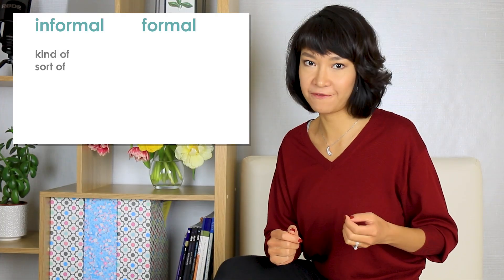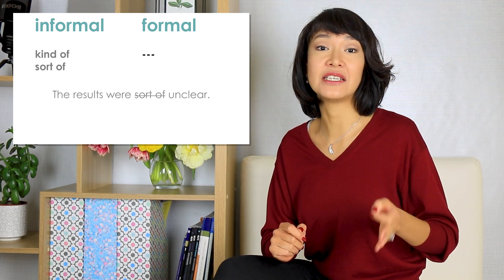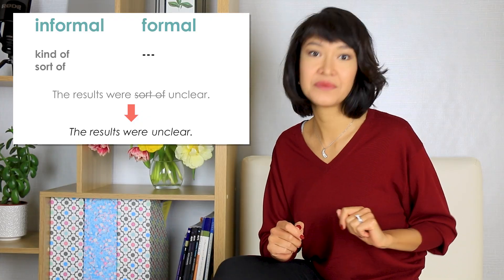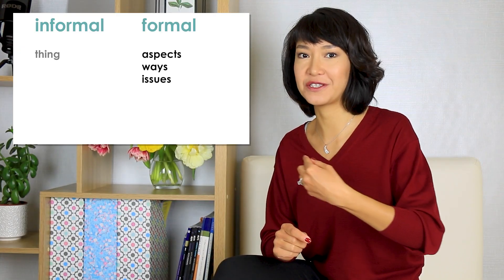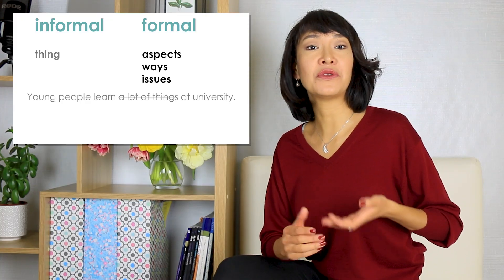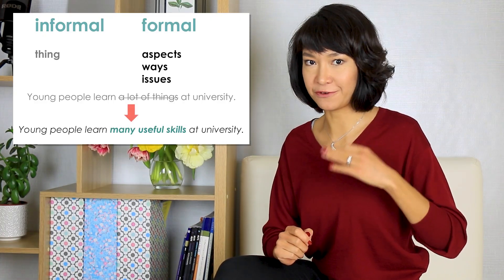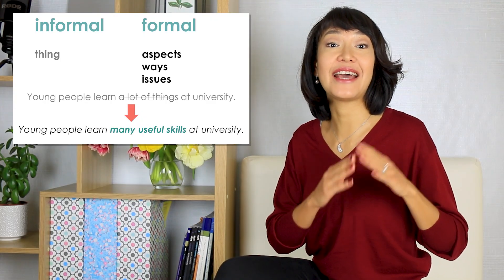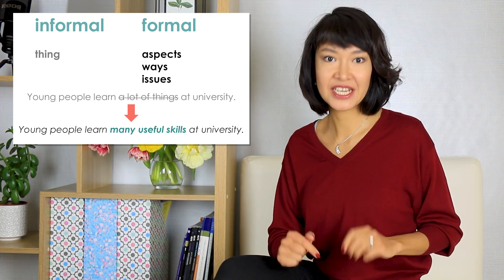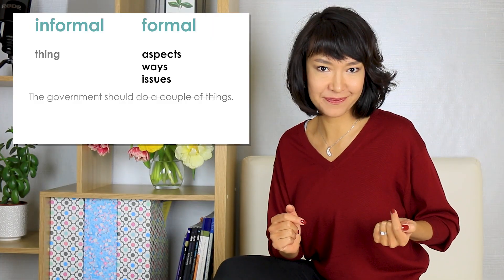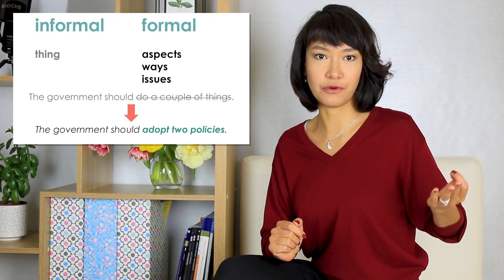Kind of or sort of — just leave them out. Instead of 'the results were sort of unclear,' just write 'the results were unclear.' The word thing is also informal if you use it instead of other words. For example, 'Young people learn a lot of things at university' — it's better to say they learn many useful skills, not things. Here is another example: 'The government should do a couple of things.' A formal version is 'The government should adopt two policies.'